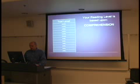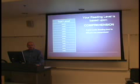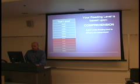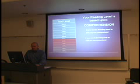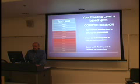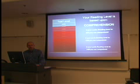Here's how it works. If you have a Lexile score of 950, that indicates that you can read and understand material written up to the 950 Lexile level. If your Lexile score increases to 1250, that means you can read, understand, and comprehend material at the 1250 level. And when your Lexile score increases to 1450, the material that you comprehend and understand increases dramatically.